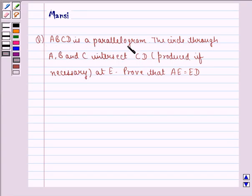The question says ABCD is a parallelogram. The circle through A, B and C intersects CD, produced if necessary, at E. Prove that AE equals AD.